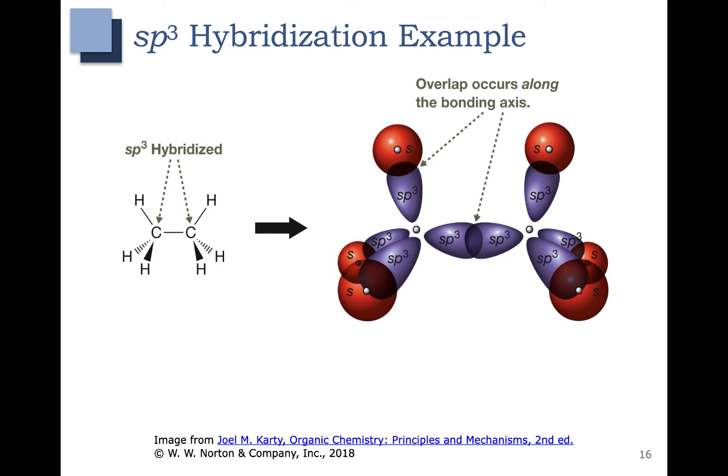Each of these orbitals is used to form a sigma bond. So here's one sp3 hybrid orbital combining with the one s orbital from the hydrogen there to form a sigma bond. Down here you can see that the sp3 hybrid orbital of the left carbon is overlapping with the sp3 hybrid orbital of the right carbon to form a sigma bond.